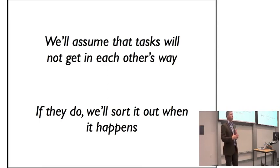That's quite an unusual thing to say in computer science. We'd like everything to be precise, to be deterministic, to know what's going to happen. Let's just say things can get in each other's way. It's not an issue. When we find there's a problem, we'll sort it out.